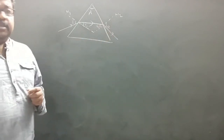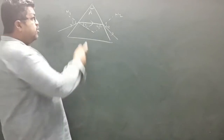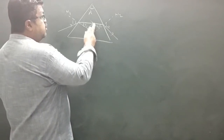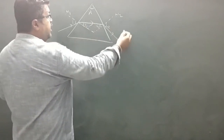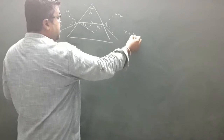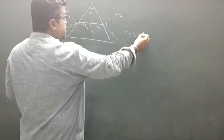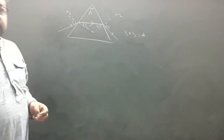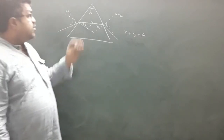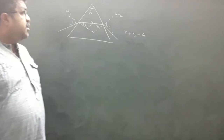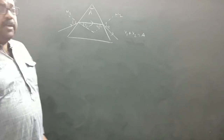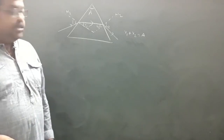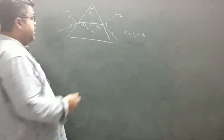The angle between the normal and the emergent ray is the angle of emergence. We have also seen that r1 plus r2 is equal to A. We will be applying this concept for finding the condition for emergence or non-emergence.